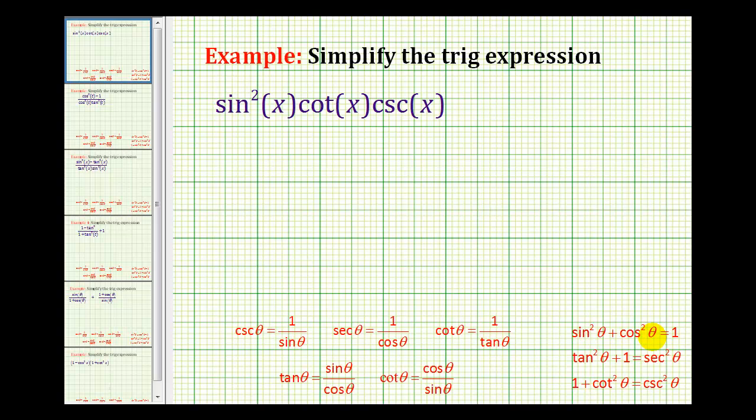In this video we'll be simplifying trigonometric expressions. To simplify a trig expression normally means to write it in terms of one trig function. Notice here we have a product of three different trig functions. We want to use our identities below in order to simplify this.